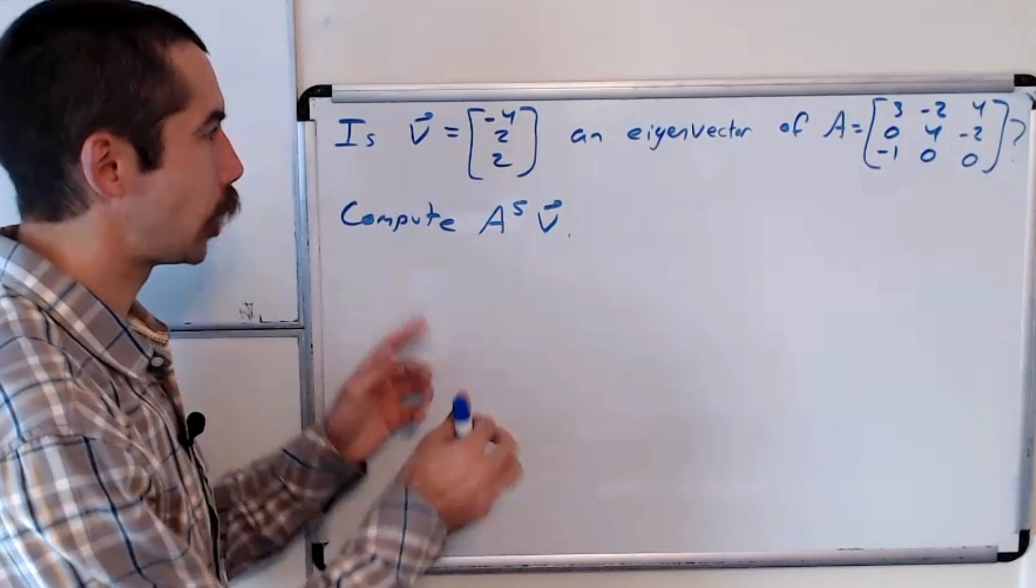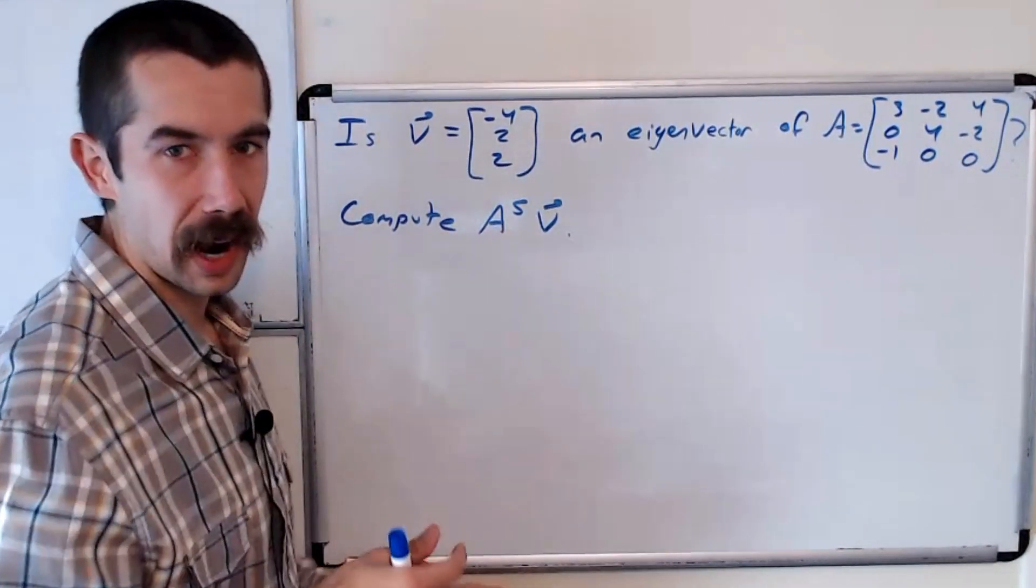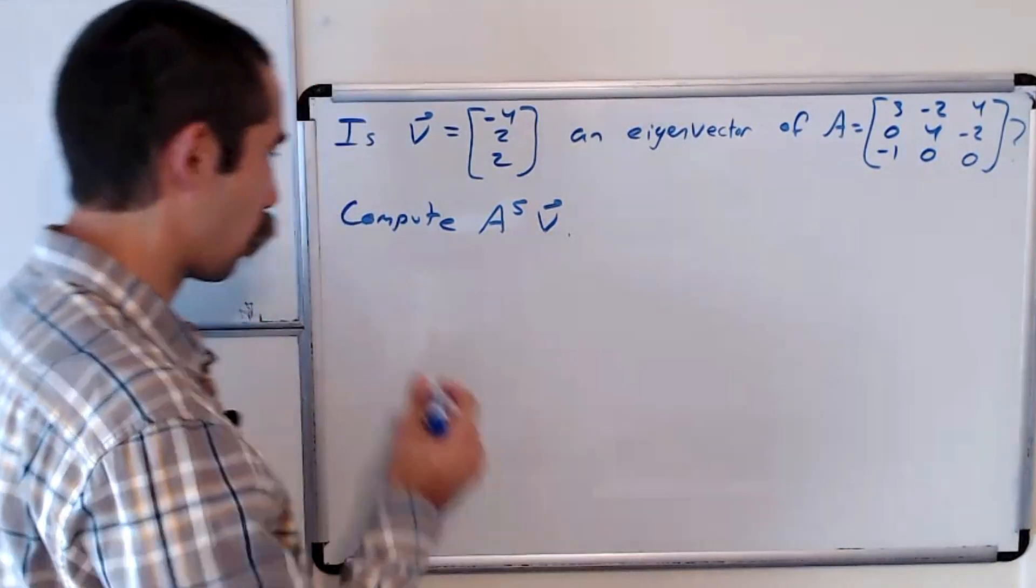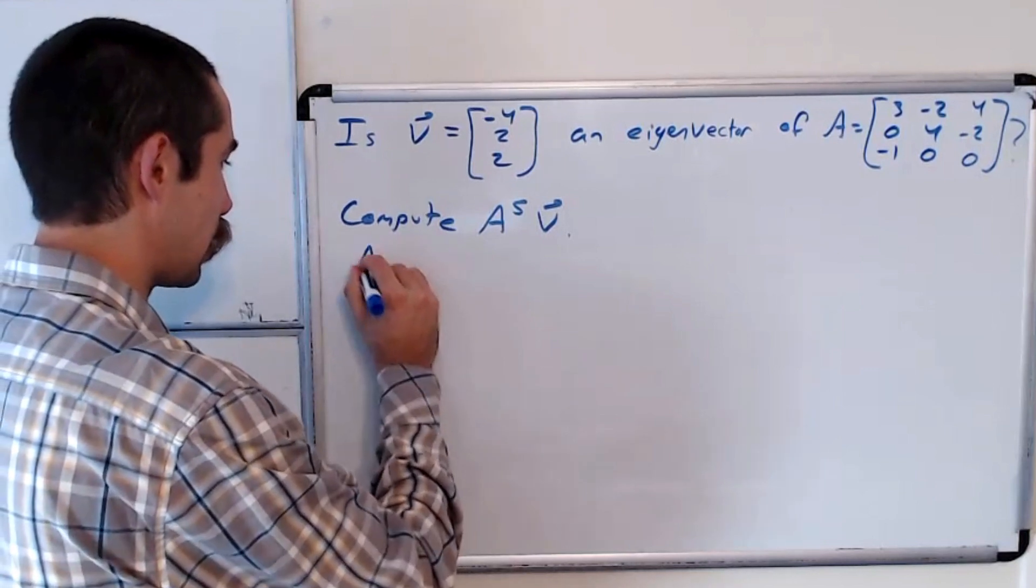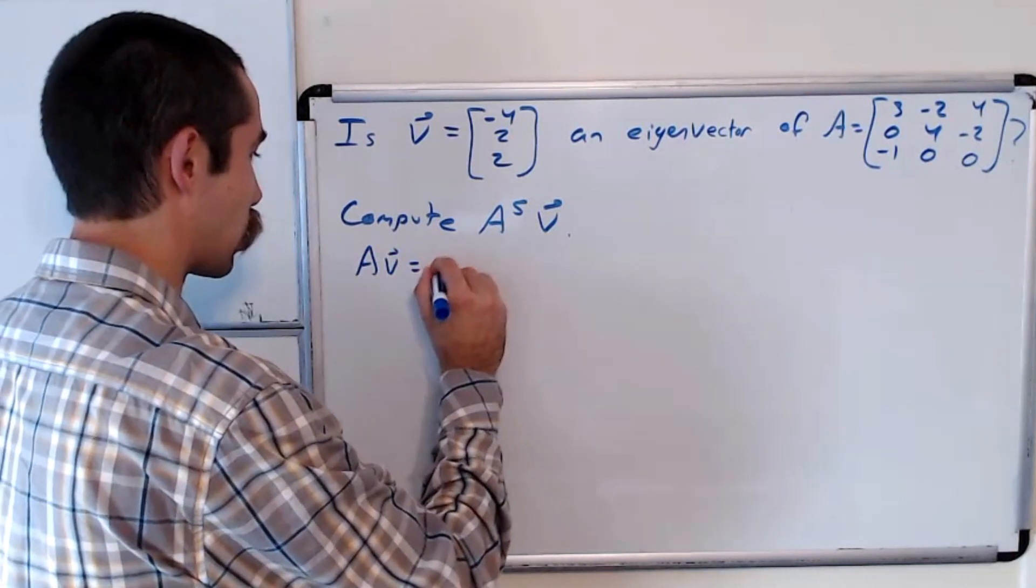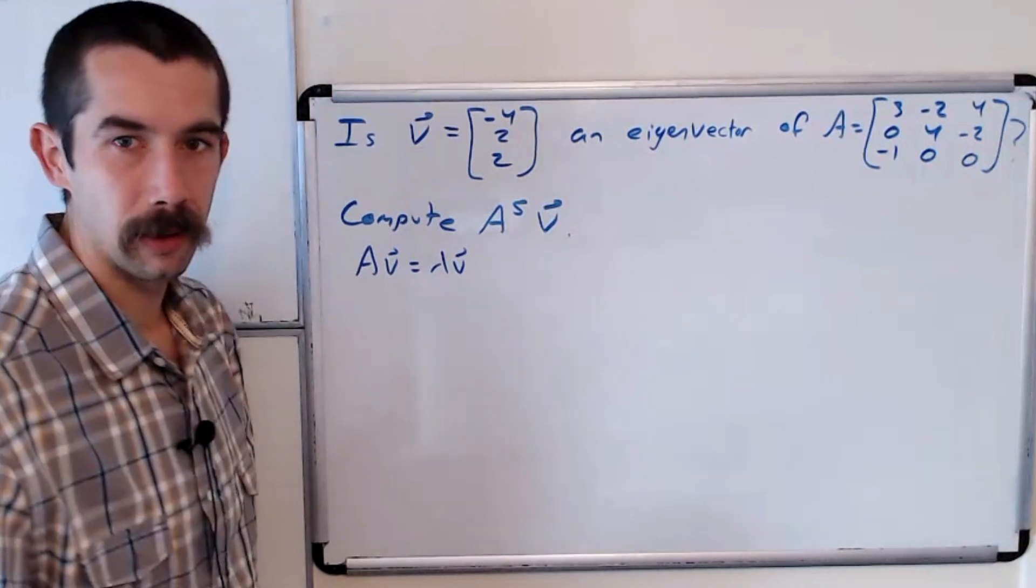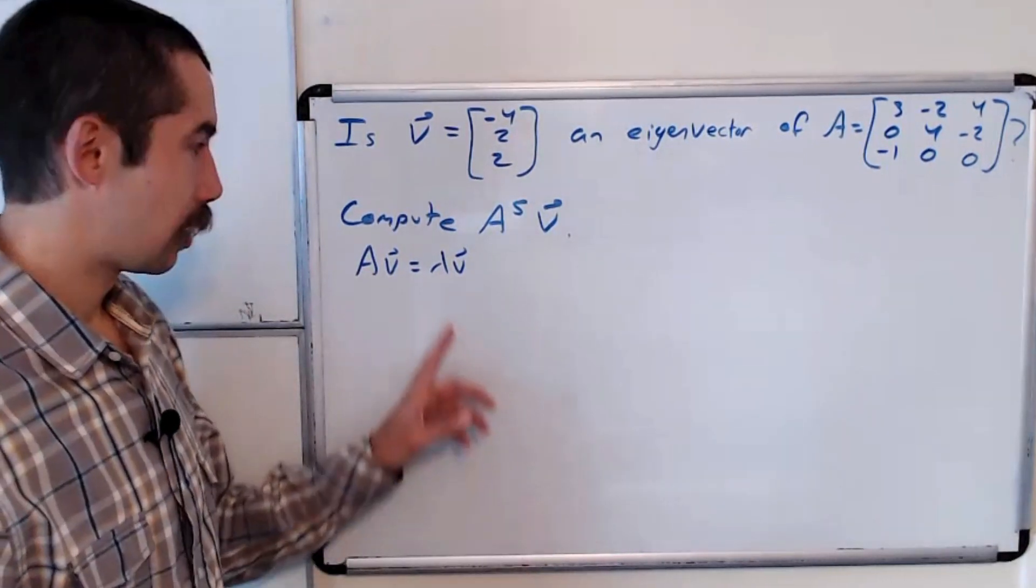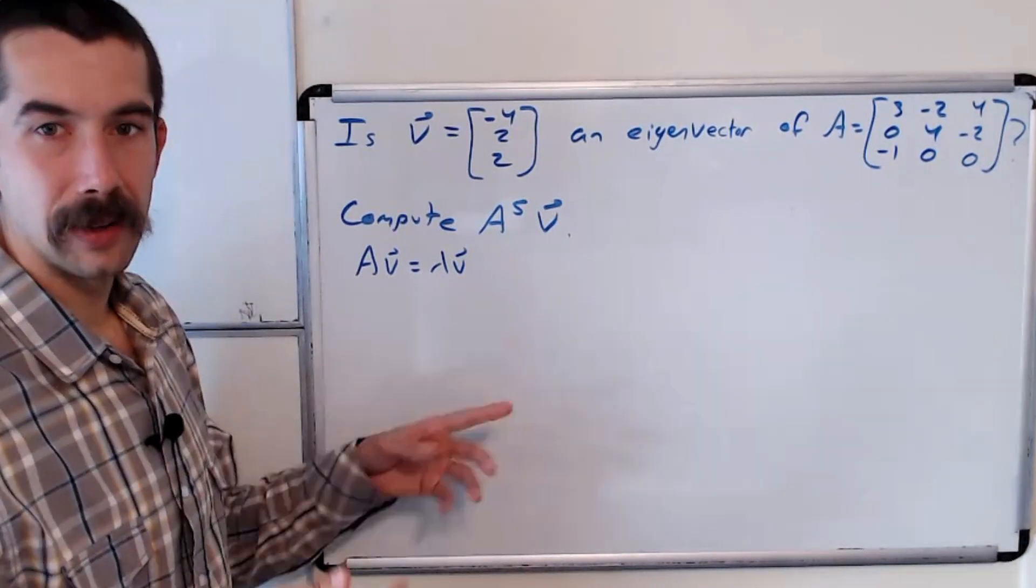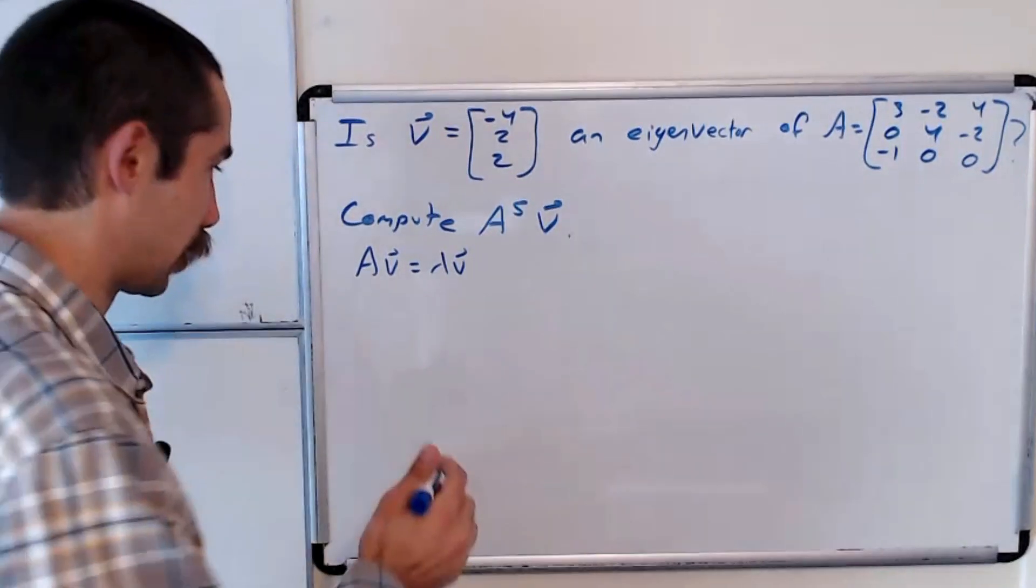So in order to check if a vector is an eigenvector of a matrix, what we want to do is check, does A times V equal some scalar multiple of V? If it does, so here lambda is a scalar, if it does, then V is an eigenvector.